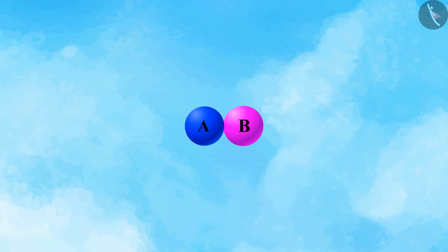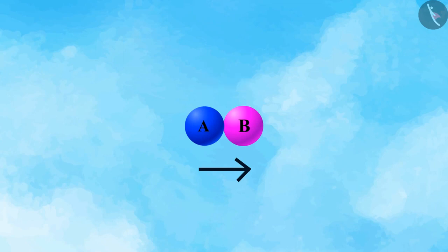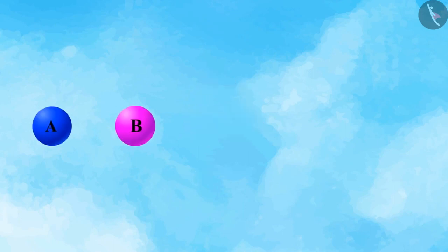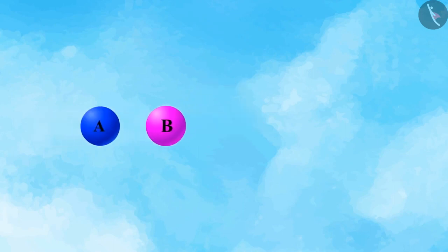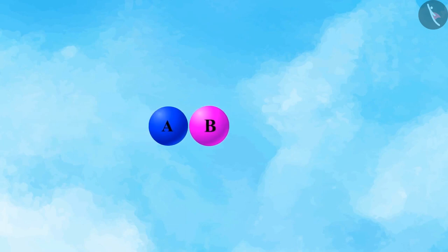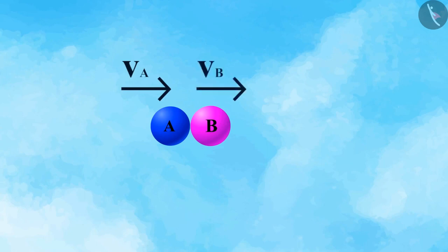The ball A exerts a force FAB on the ball B. Similarly, the ball B exerts a force FBA on the ball A. Let us suppose the velocities of the objects A and B after collision are VA and VB respectively.